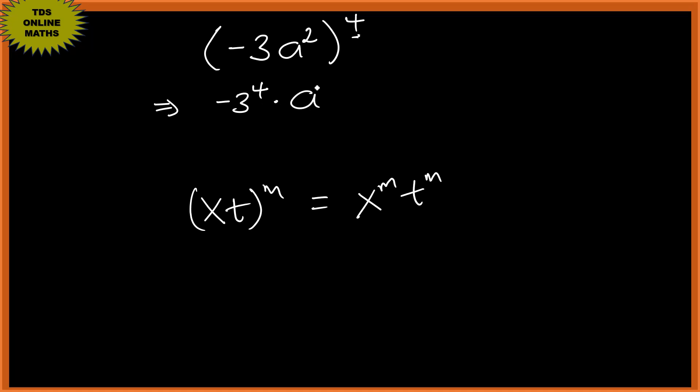a to the power 2 times 4. So we have negative 3 to the power 4 times a to the power 8 because this one multiply.